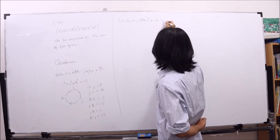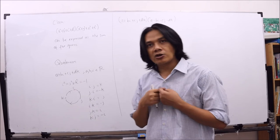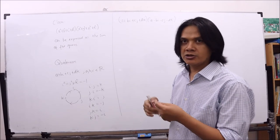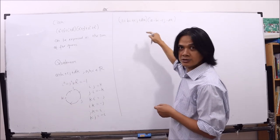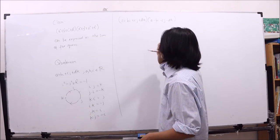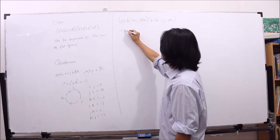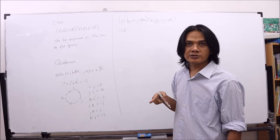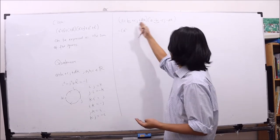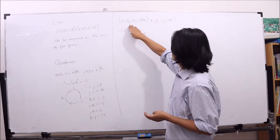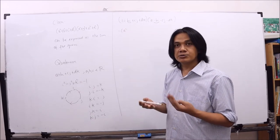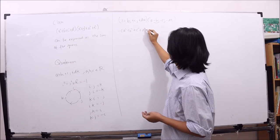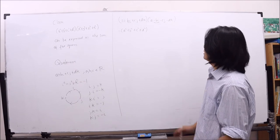We want to do something similar to multiplying a complex number with its conjugate. For the quaternion, the conjugate is (a - bi - cj - dk). Multiplying these out: a times a gives a²; the i times i term gives -1 and b times -b gives -b², so bi times -bi gives +b². Doing the same with the j and k terms also gives +c² and +d².